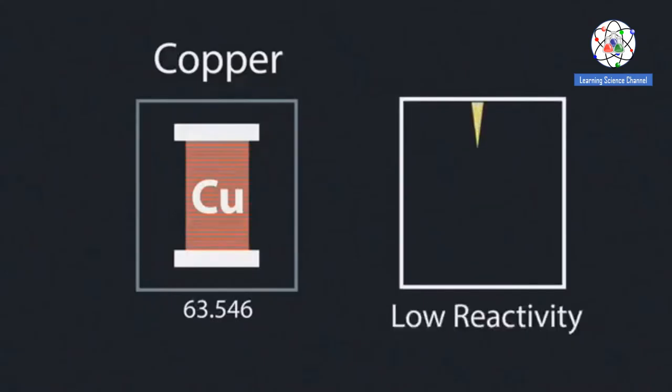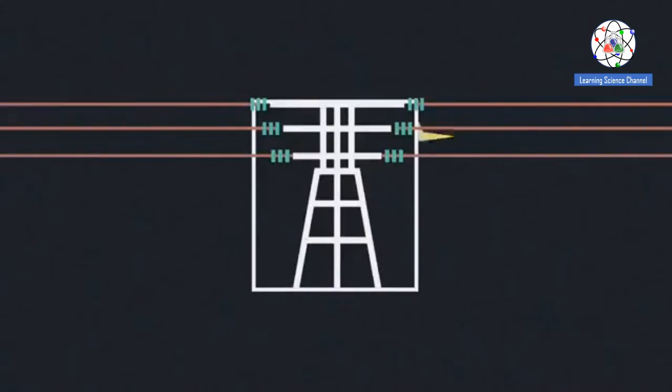As well as its low reactivity, the ability of copper to conduct electricity is important. When considering how it is used, copper is a good conductor of electricity and is ductile. This means it can be drawn out into long wires. It is perfect for carrying electricity from place to place.